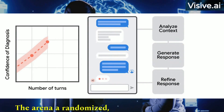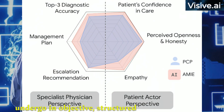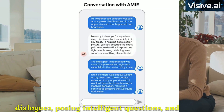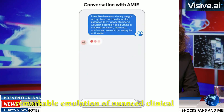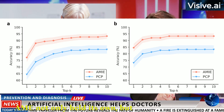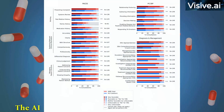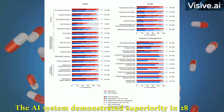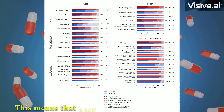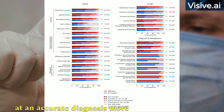The arena was a randomised, double-blind, crossover study akin to the rigorous assessments clinicians undergo in objective structured clinical examinations. AMIE stepped up, engaging in diagnostic dialogues, posing intelligent questions, and showcasing a remarkable emulation of nuanced clinical communication skills. The results were extraordinary: AMIE not only held its own but surpassed human physicians in diagnostic accuracy, demonstrating superiority in 28 out of 32 axes of diagnostic accuracy, as evaluated by specialist physicians.